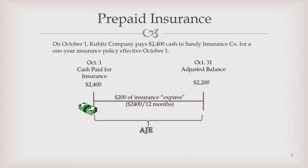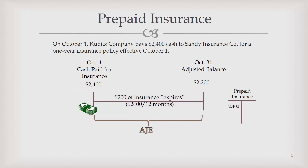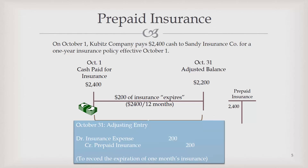Here is prepaid insurance. On October 1, Qubit's company paid $2,400 cash for a one-year insurance policy. On October 1, they would have recorded a debit to prepaid insurance and a credit to cash. But now at the end of October, basically one month worth of insurance has expired — it's been used up during that month just through the passage of time. So we need to record an adjusting entry to show that that insurance is being used up, which would be a debit to insurance expense and a credit to prepaid insurance.